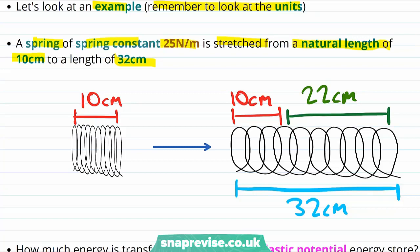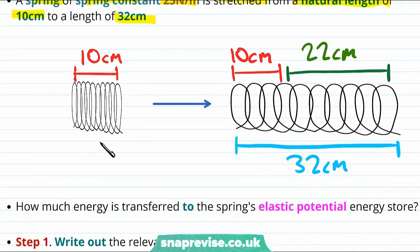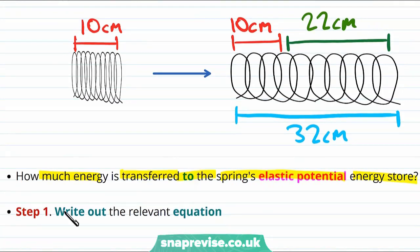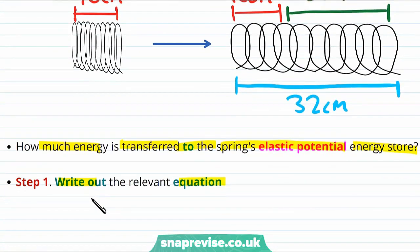So now we've made a bit more sense of the information we've been given, let's move on to the thing we actually want to answer. How much energy is transferred to the spring's elastic potential energy store? Well the first step as always is going to be to write out the relevant equation. In particular we need the equation for the elastic potential energy, which tells us that it is equal to a half multiplied by the spring constant, and then multiplied by the extension squared.